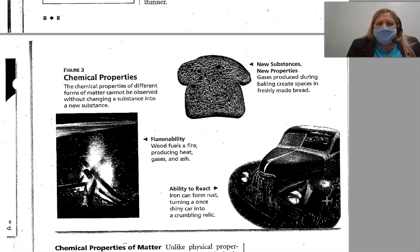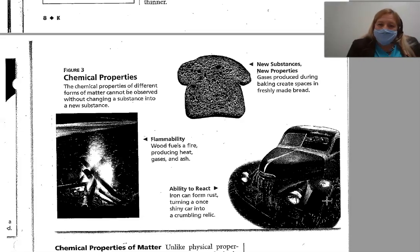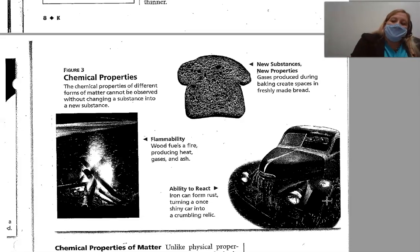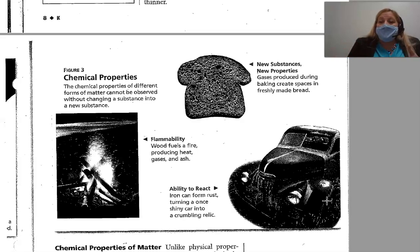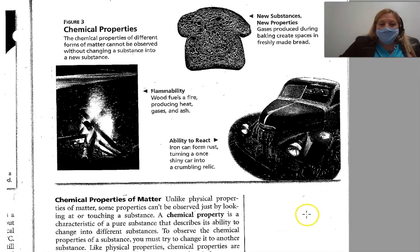Gas produced during baking creates spaces in freshly made bread — it's produced gas, so I can't reverse it back to something else. Iron can form rust, turning a once shiny car into a crumbly relic. Once it rusts, I can't put it back into shiny metal — I would have to replace it with a new piece of metal. The rust cannot be reversed, so it is a chemical property.